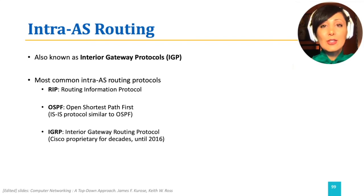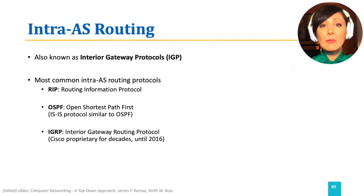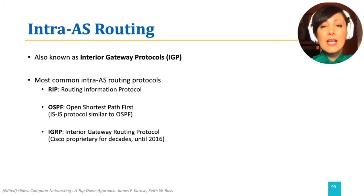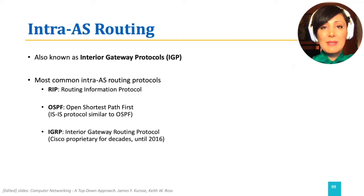Within each AS, an intra-AS routing protocol should run, known as Interior Gateway Protocol. Interior Gateway Protocol finds the best path between the routers within an AS. RIP, OSPF, ISIS, and IGRP are among the famous intra-AS routing protocols. RIP is based on distance vector, and others are based on link-state routing.